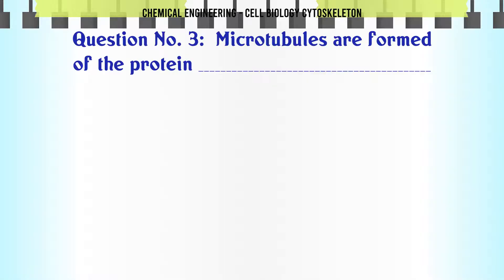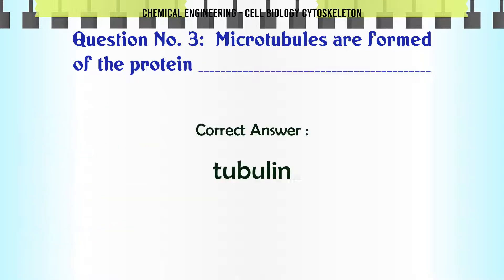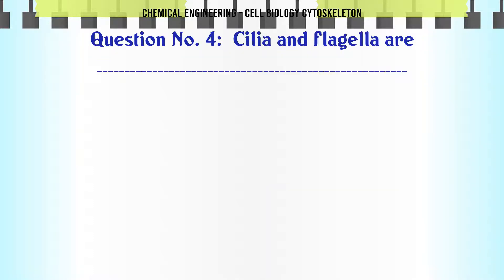Microtubules are formed of the protein: A. Clathrin, B. Keratin, C. Tubulin, D. Actin. The correct answer is Tubulin.